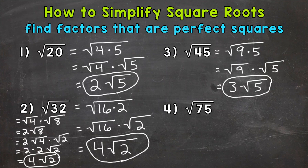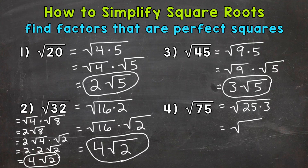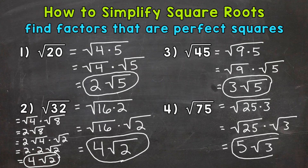Lastly, number 4: we have the square root of 75. Any factors that are perfect squares? 25 and 3 are factors of 75. 25 times 3 equals 75, and 25 is a perfect square. So the square root of 75 equals the square root of 25 times 3. Let's split: the square root of 25 times the square root of 3. The square root of 25 is 5. The square root of 3 is in simplest form, so we can't break that down any further. Our final simplified answer is 5 square root 3.